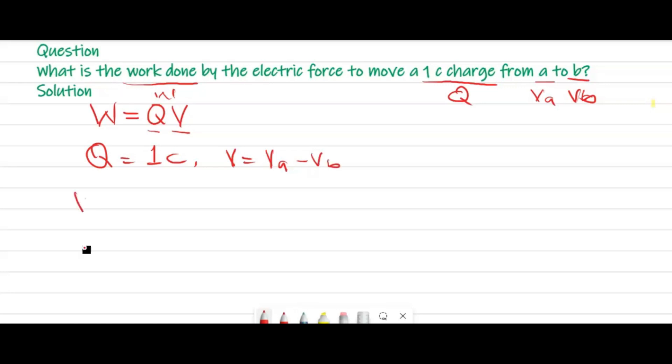Therefore W equals, when you change the value of Q equals to one coulomb, you will have one times V equals VA minus VB. This is going to give us one times VA minus VB.